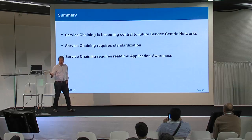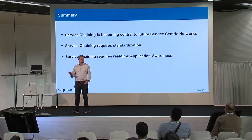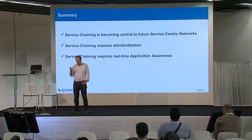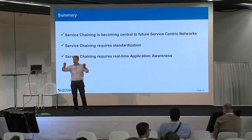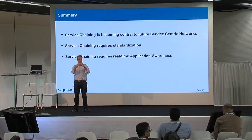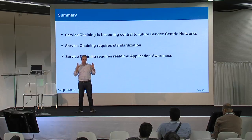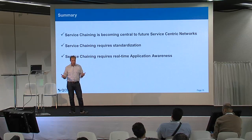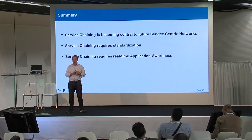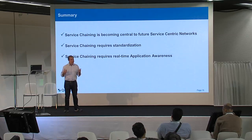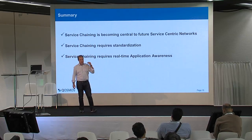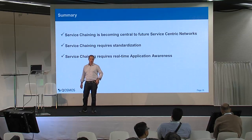As a summary, service chaining is becoming a key concept because it will be a new way to design networks. Instead of a chain of services where every flow goes through every box, you will have a service classifier that diverts only the right flows to the right virtual functions — which will be absolutely key in the future for both service providers and data centers. It requires a tremendous amount of standardization to make different solutions interoperate, and it requires application awareness — which is lacking today — to save resources and send only the right flows to the right middle boxes.